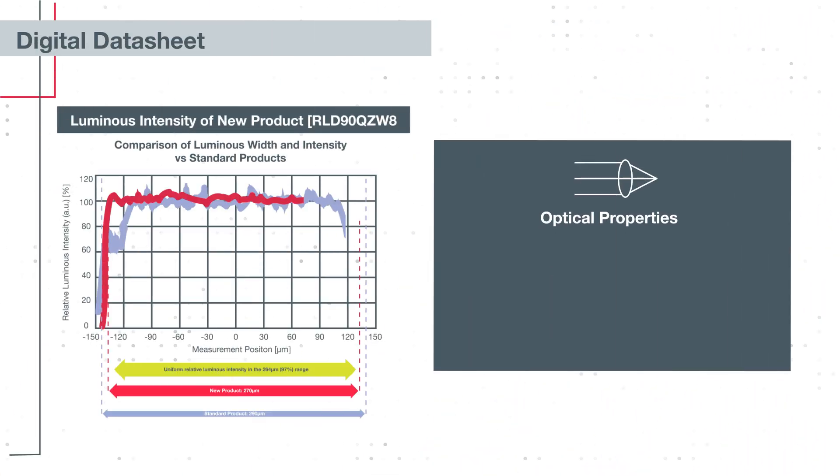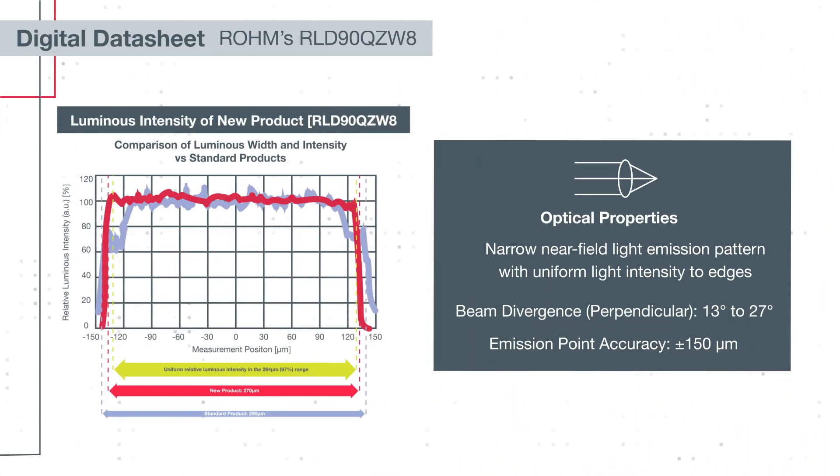This laser diode features a narrow light emission pattern with uniform luminous intensity to the edges of the pattern. The perpendicular beam divergence is between 13 and 27 degrees while maintaining emission point accuracy within plus or minus 150 microns.